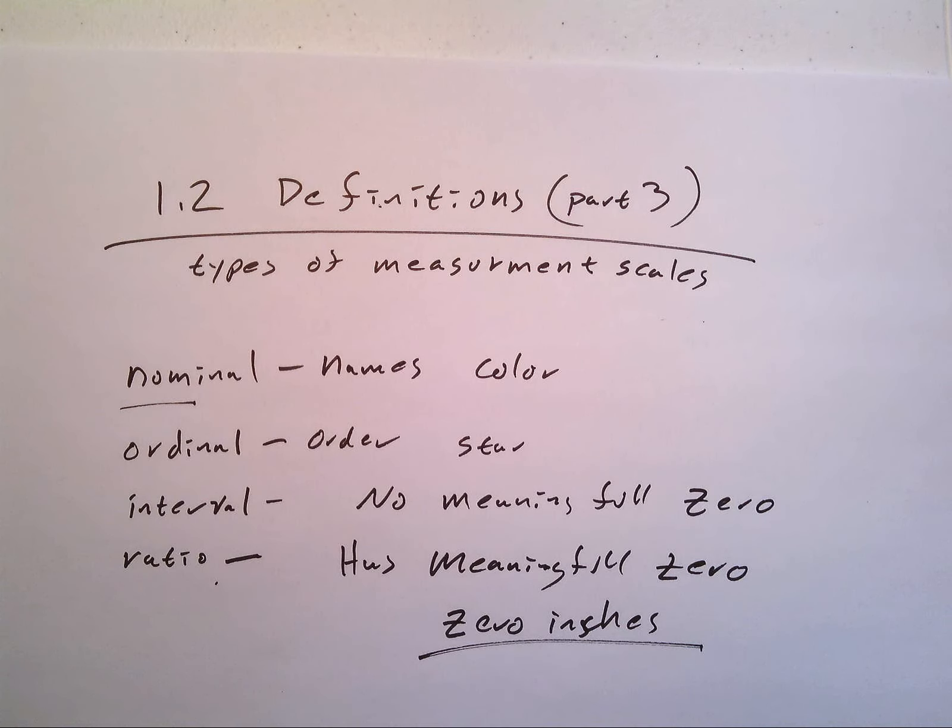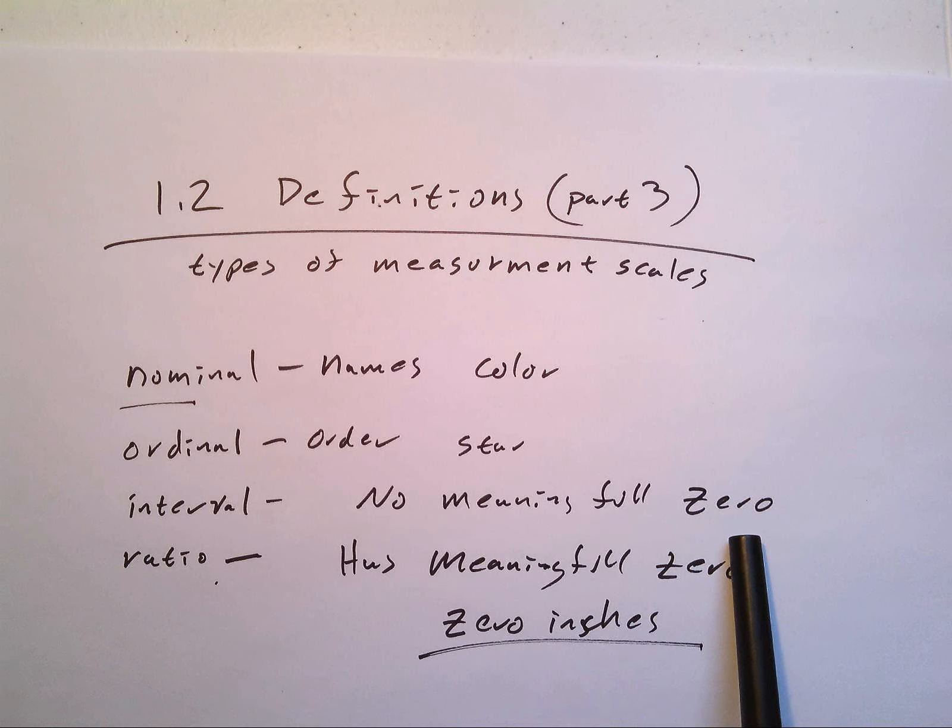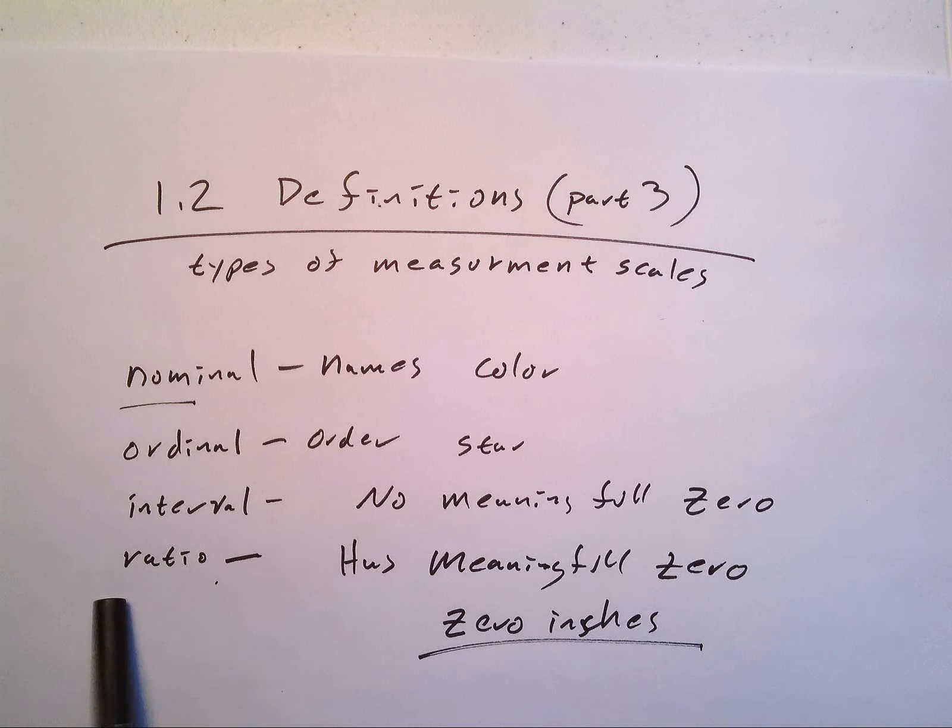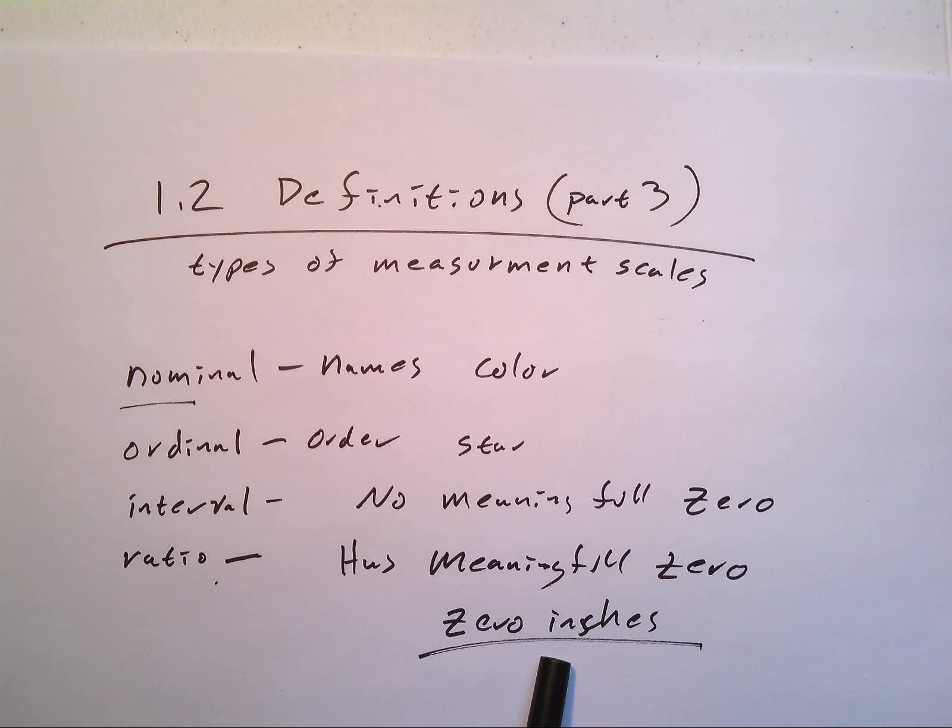Nominal, just like its name says, it's just names. It's the lowest level of measurement. You can't really say one is bigger than another, one is smaller than another, is better than another. An example of nominal would just be colors. We can't really compare one color to another.